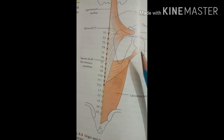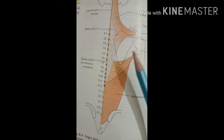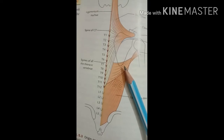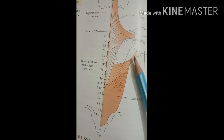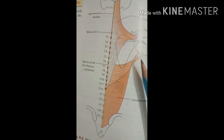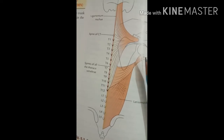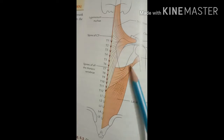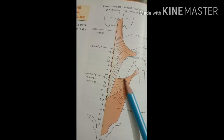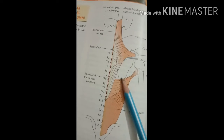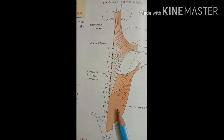The nerve supply to the latissimus dorsi is the thoracodorsal nerve. The actions of this muscle are adduction, extension, and medial rotation of the shoulder. It also helps in climbing and holds the inferior angle of the scapula in its proper position during movement of the shoulder joint.